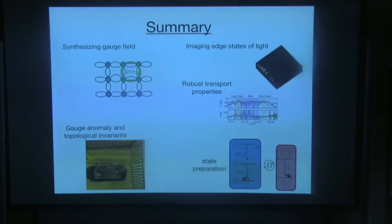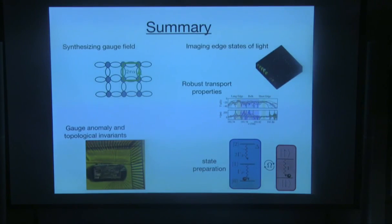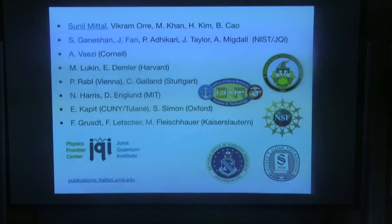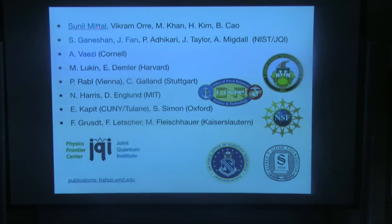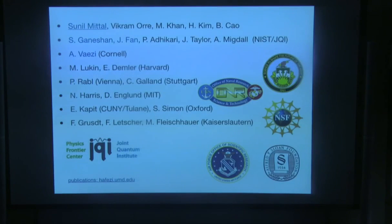I would like to summarize. In the first part, we looked at how we can synthesize the gauge field and how we can look at the robustness of these edge states in the non-interacting regime. How we can measure these topological invariants. And how we can prepare these many-body states of photons. I would like to acknowledge all the people who were involved in the work I presented — in particular for the measurement of the topological invariants: Sunil Mithal, Siram Ganeshan, Jay Phan, and Abul Hasan. In particular, Sunil did the experiment, and Siram did all the nice Chern-Simons formalism. Thank you very much for your attention.